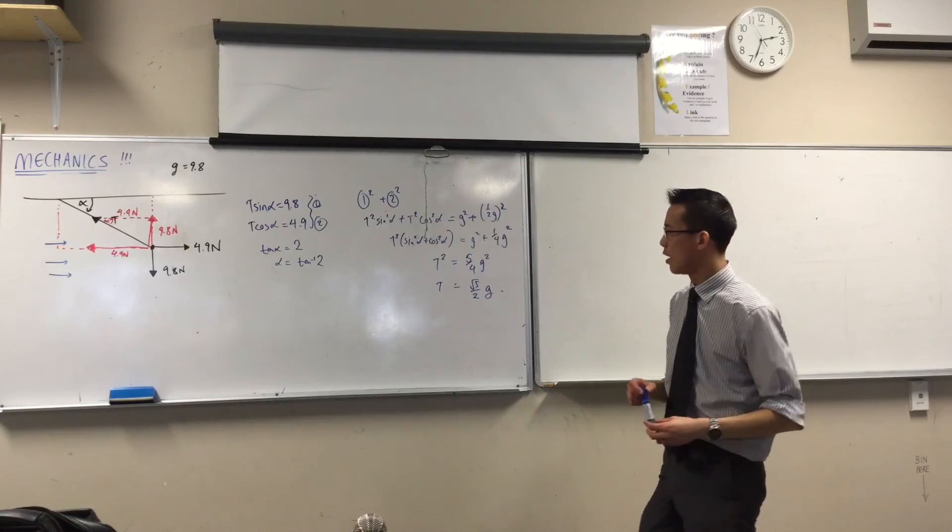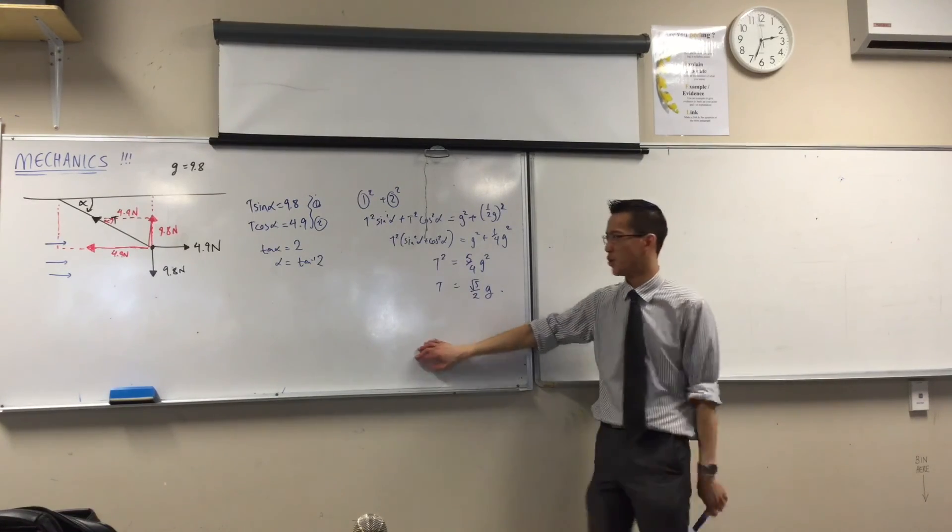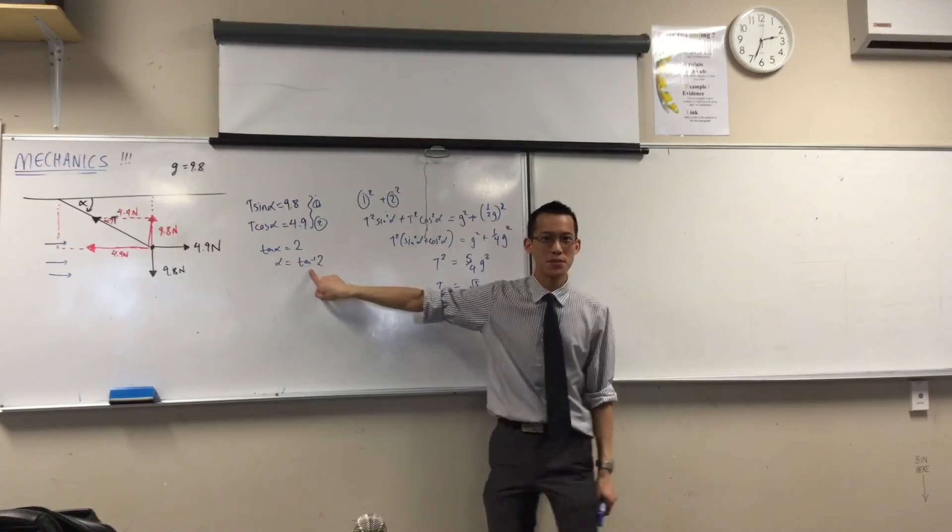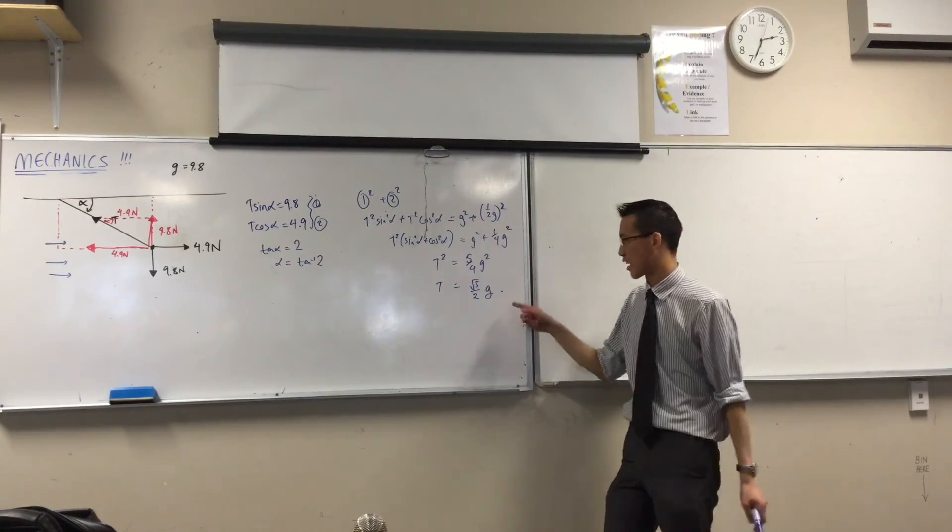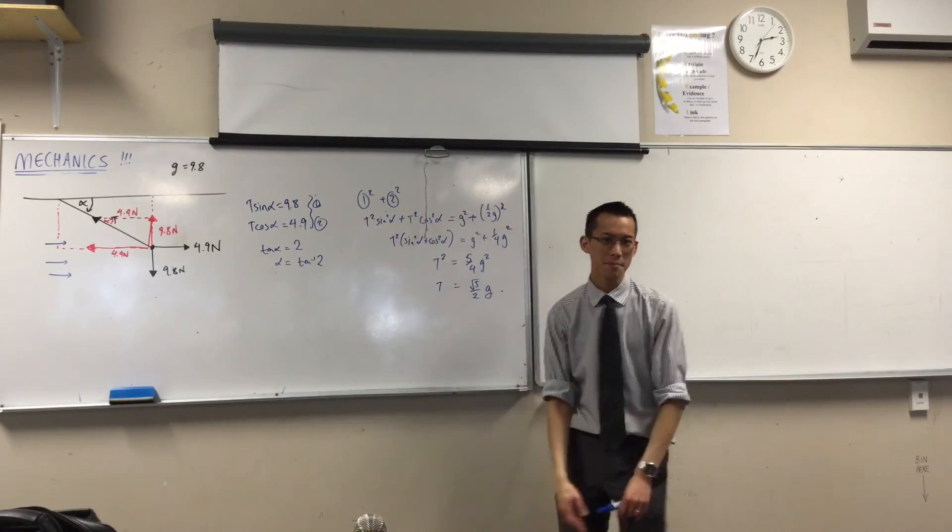If I leave the answer as root 5 G, would that be considered wrong? I think that's okay. This particular question has been unusual in leaving this not in terms of G. I think it's just convenient, because this is nice and neat. So yeah, it's fine.